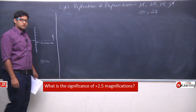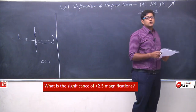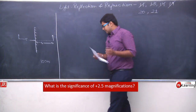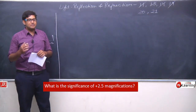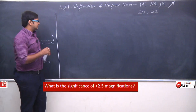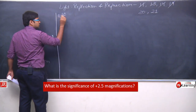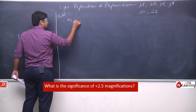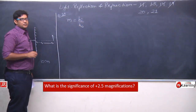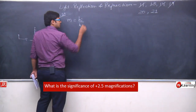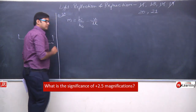Question number 20 asks: what is the significance of plus 2.5 magnification? Magnification can be positive or negative — what does positive magnification mean and what does negative magnification mean? We know that magnification M equals height of image upon height of object, which is also equal to minus v by u.